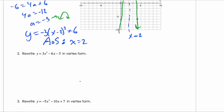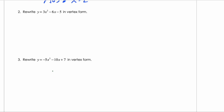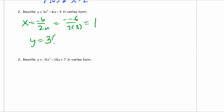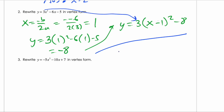We're going to do one more. To convert to vertex form, you can either complete the square or use x equals negative b over 2a. Using the formula: x equals negative negative 6 over 2 times 3, which equals 1. Substitute x equals 1 back in to get y equals 3 minus 11, which is negative 8. So the vertex is (1, negative 8). Note the a value is the same in all three forms, so the equation is y equals 3 times (x minus 1) squared minus 8.